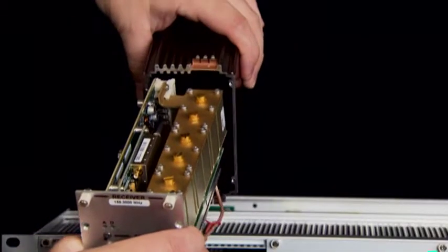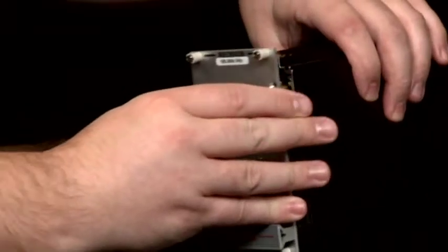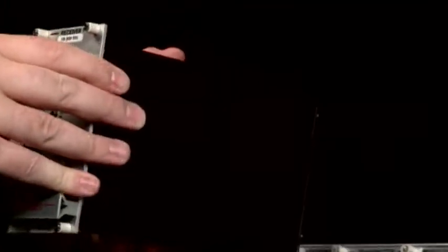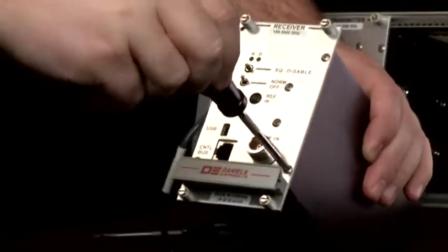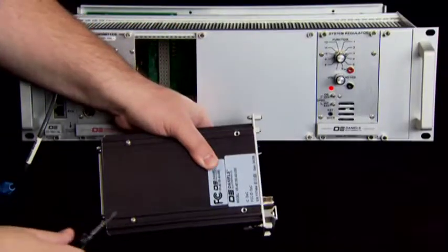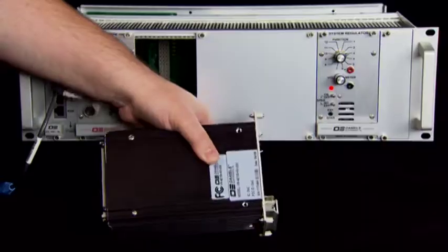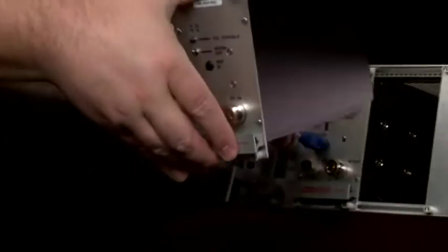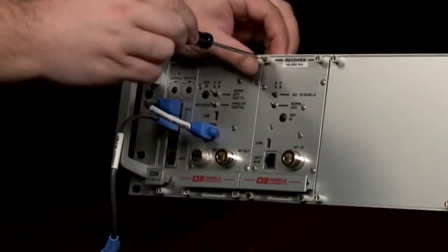Replace the receiver cover by sliding the receiver mainboard into the far left slot in the cover. Replace the four front panel screws and the two side panel screws. Slide the receiver back into the sub rack and turn the four quick release fasteners on the receiver 90 degrees counterclockwise to tighten them.